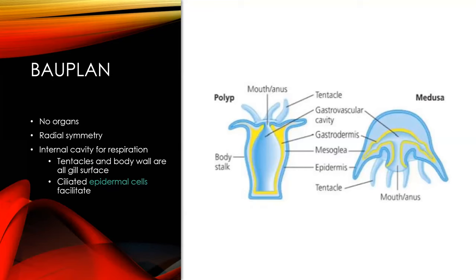Within cnidarians we're not going to see the typical organs we would see in most other animals. They operate on radial symmetry — symmetry around a center axis, the same as we would see in starfish. Within the internal cavity, tentacles and body wall all serve as gill surfaces. The ciliated epidermal cells help facilitate respiration within the internal cavity — ciliated meaning covered in tiny hair-like structures — which also helps with sensory function.